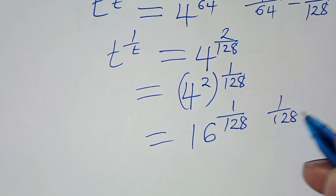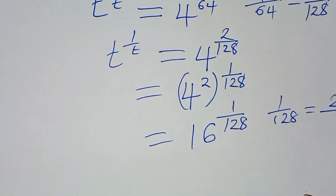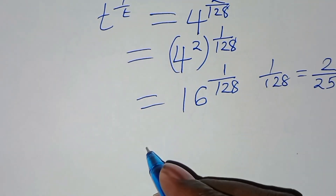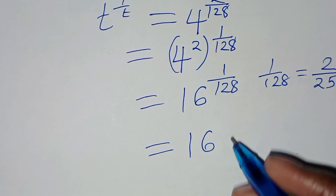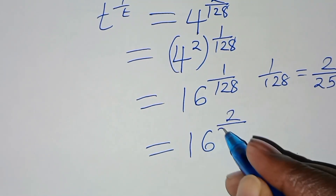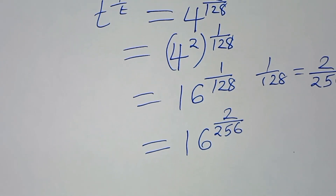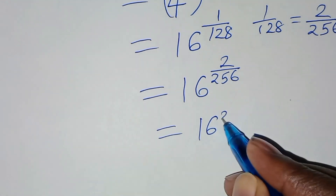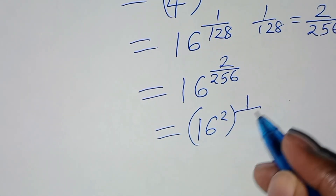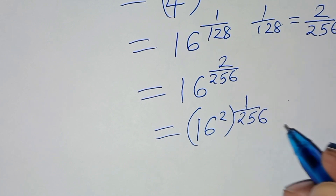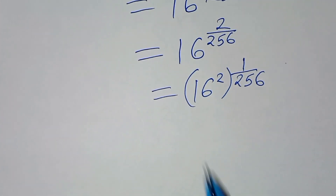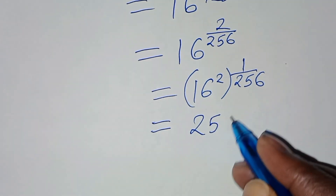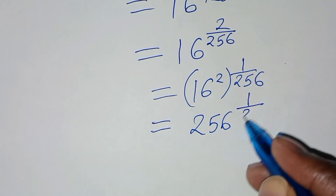So 1 over 128 can also be expressed as 2 over 256. Substituting this, we'll have 16 raised to the power 2 over 256. So here we have 16 raised to the power 2, multiplied by 1 over 256. The next step: we have 16 squared, which is 256, raised to the power 1 over 256.